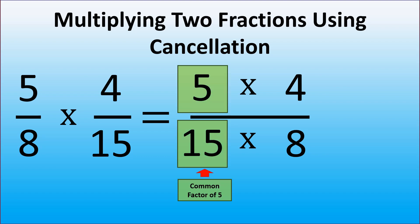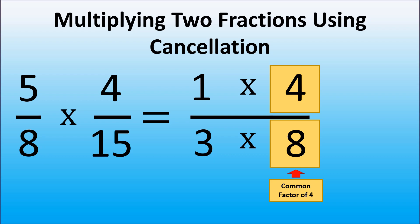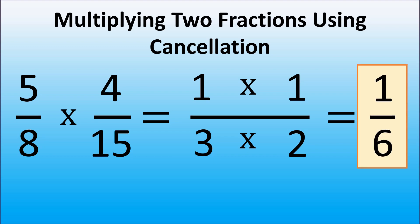Now it is easy to see a common factor of 5 in 5 and 15, and a common factor of 4 in 4 and 8. So let's simplify the expression. We divide 5 and 15 by a common factor of 5, and that gives us 1 in the numerator and 3 in the denominator. We also divide 4 and 8 by a common factor of 4, and that gives us 1 in the numerator and 2 in the denominator.